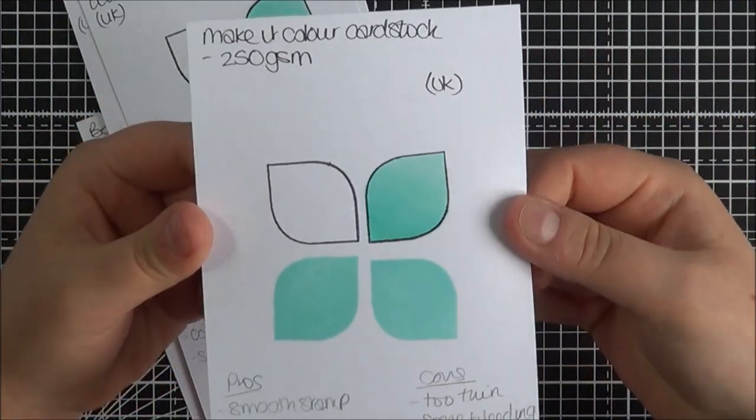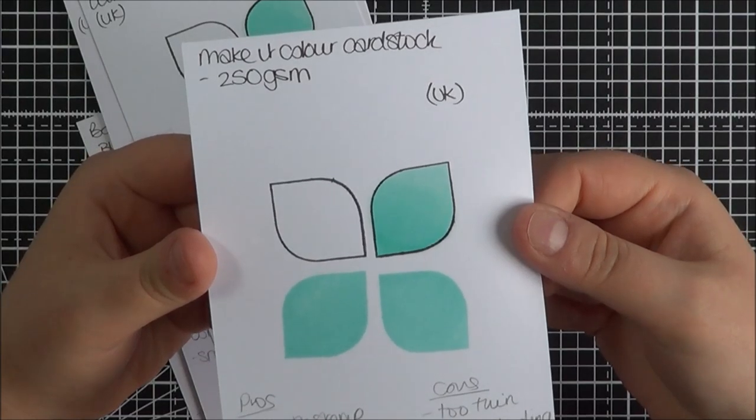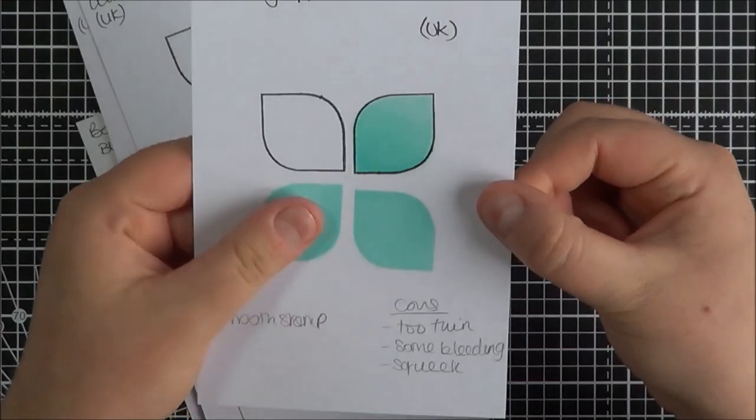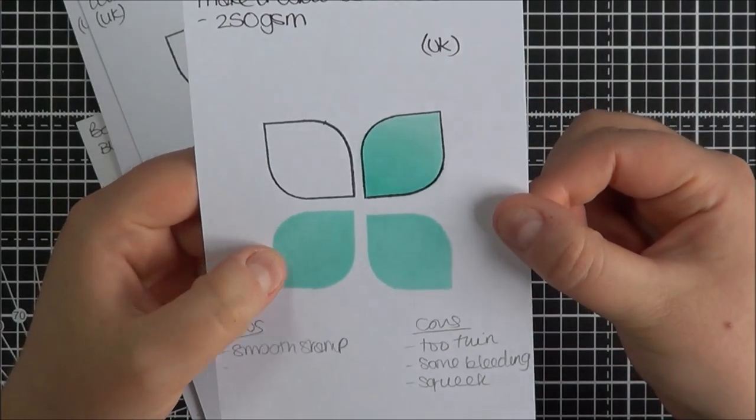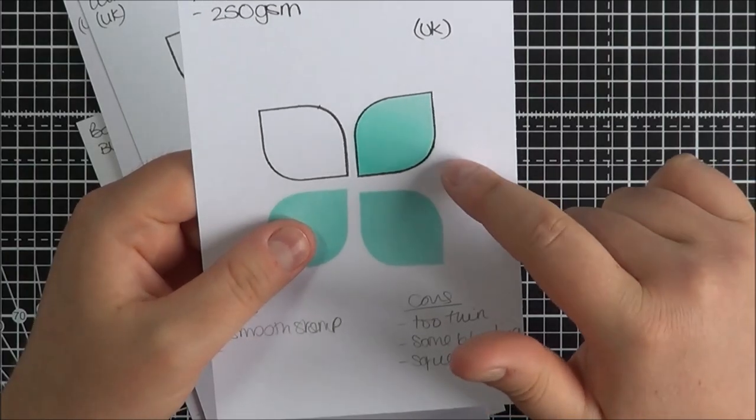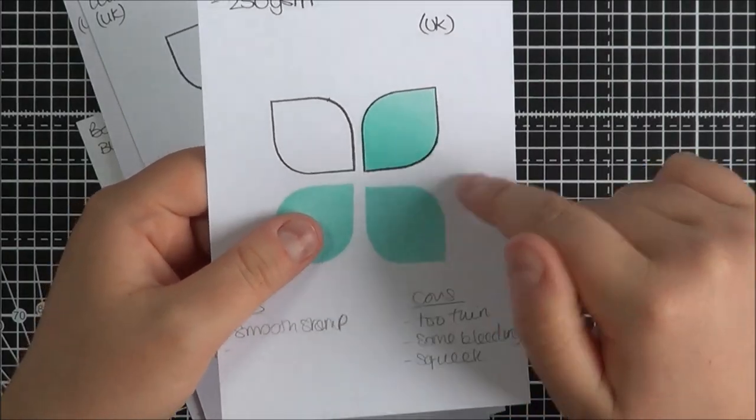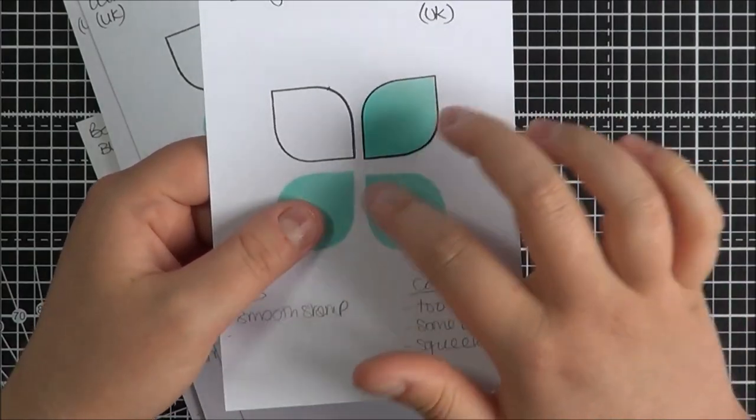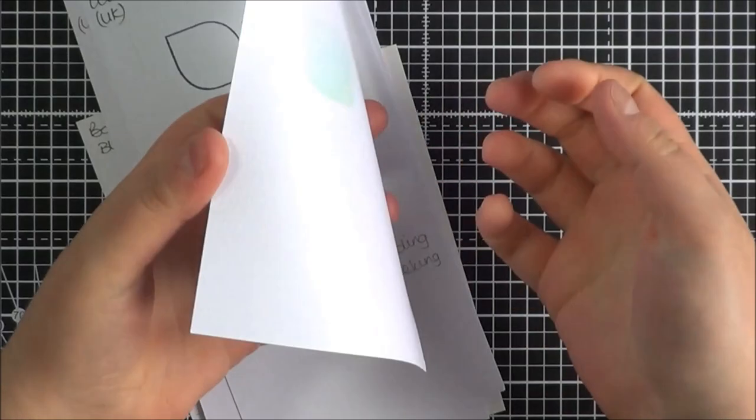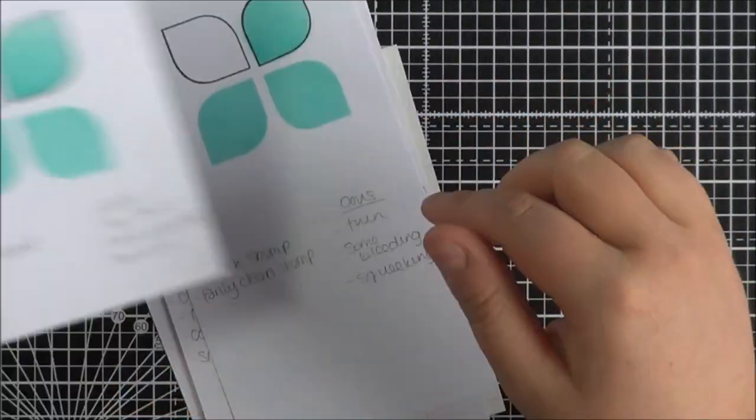And then got some of the Make It Colour cardstock. This is 250 GSM available in the UK as well. Again nice smooth cardstock. Stamping not too bad. Blend of Copics was good. A small amount of bleeding however it squeaked like anything when I was using the markers. I didn't like that at all. Again thin. That's the only problem.